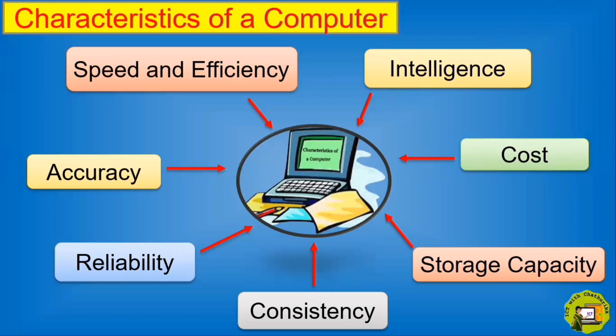Last one is intelligence. Computers are not intelligent. It cannot think like us. So, it is an unthinkable device. They only perform according to the given instructions.